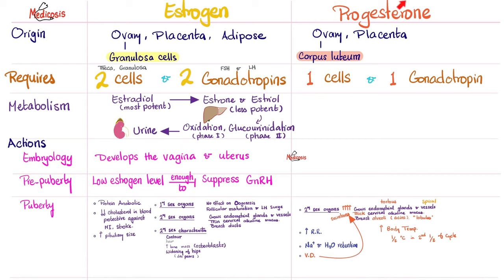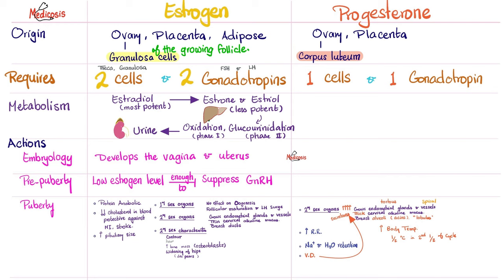Now let's compare between estrogen and progesterone. Estrogen comes from the ovary, the placenta, and adipose tissue — estradiol, estriol, and estrone. Estradiol is the most potent, estriol is the least potent, and estrone is in between. As for progesterone, it is also made by granulosa cells of the ovary — specifically the granulosa cells of the corpus luteum, which make progesterone, some estrogen, and some inhibin for negative feedback.